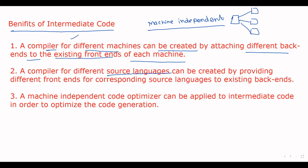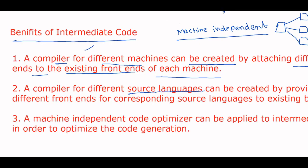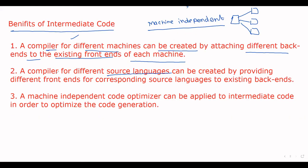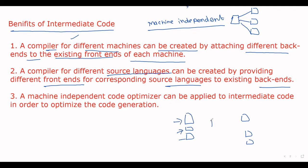Similarly, a compiler for different source languages can also be created. In this case, the back ends are fixed and we create different front ends corresponding to different source languages. The compiler converts all the source languages into intermediate form, which is then passed to the different back ends.